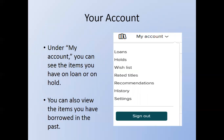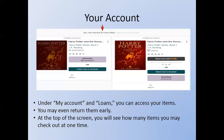Under My Account you can see the items you currently have on loan or on hold. You can also view the items you have borrowed in the past. Under My Account and Loans you can access your items again, and you may even return them early if you wish. At the top of the screen you will see how many items you may check out at one time.